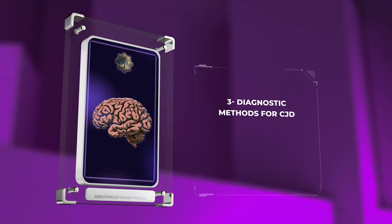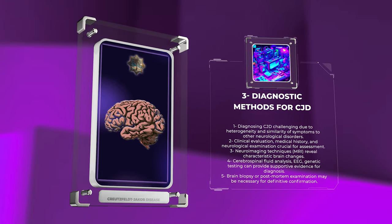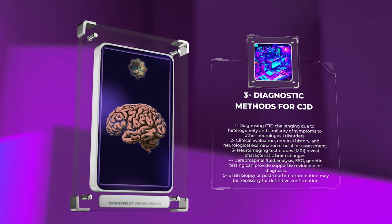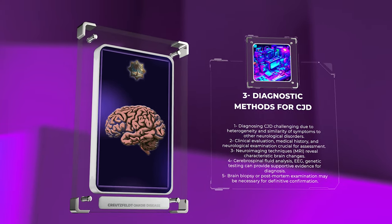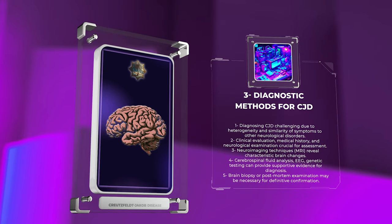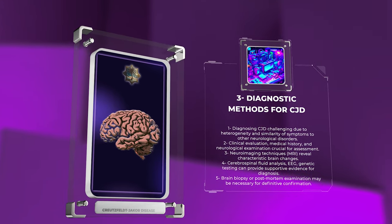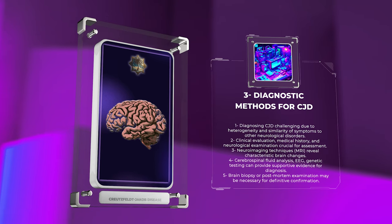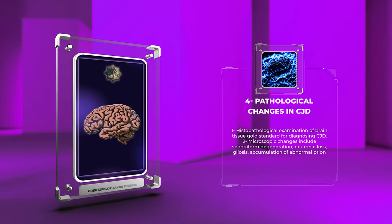Diagnosing CJD can be challenging due to its heterogeneity and the similarity of symptoms to other neurological disorders. However, certain diagnostic criteria and investigations can aid in the identification of this condition. Clinical evaluation, including a detailed medical history and neurological examination, is crucial for assessing the pattern and progression of symptoms. Neuroimaging techniques, such as magnetic resonance imaging (MRI), can reveal characteristic changes in the brain, such as cortical atrophy and hyperintensities in specific regions. Additionally, cerebrospinal fluid analysis, electroencephalography (EEG), and genetic testing can provide supportive evidence for CJD diagnosis. In some cases, brain biopsy or postmortem examination may be necessary for definitive confirmation.